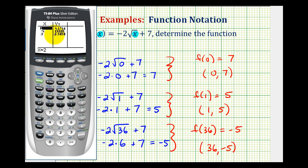And now when we go to the table feature by pressing second graph, we can type in any x value that we want. So if we type in x equals 0, x equals 1, and x equals 36, we can check our function values in the y column. Notice we have 7, 5, and negative 5, which verifies we did this correctly.